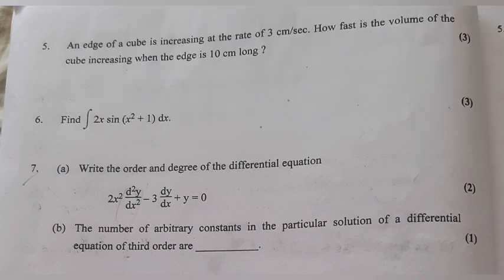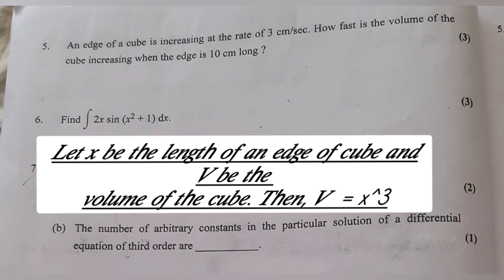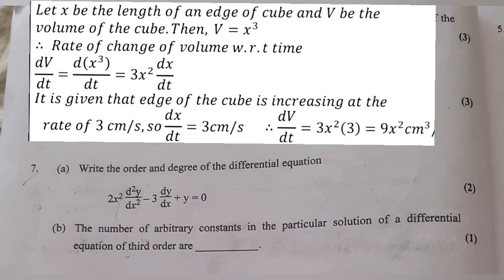An edge of a cube is increasing at the rate of 3 cm per second. How fast is the volume of the cube increasing when the edge is 10 cm long? Let x be the length of an edge and V be the volume. Then V = x³, so dV/dt = d(x³)/dt = 3x² × dx/dt.